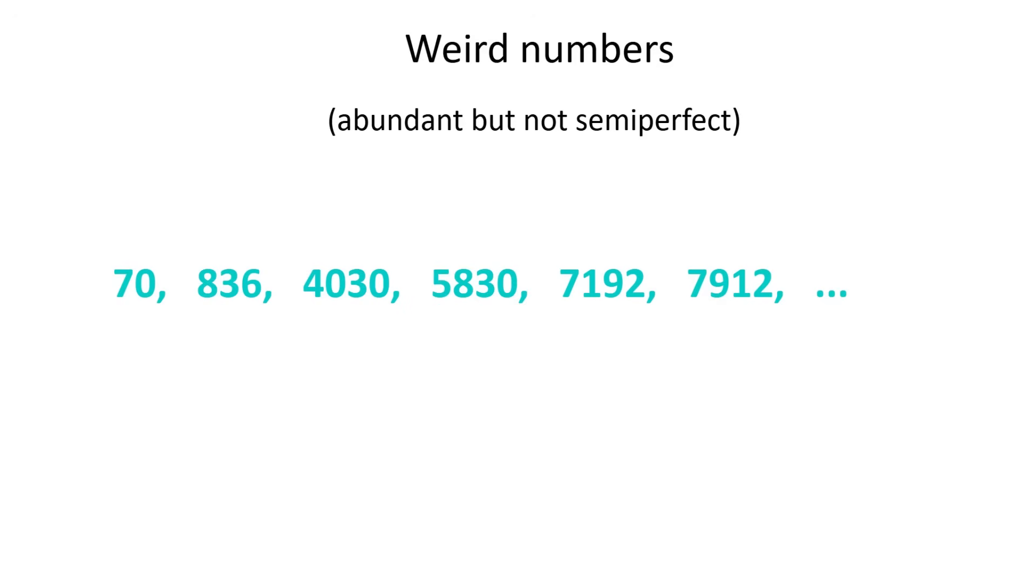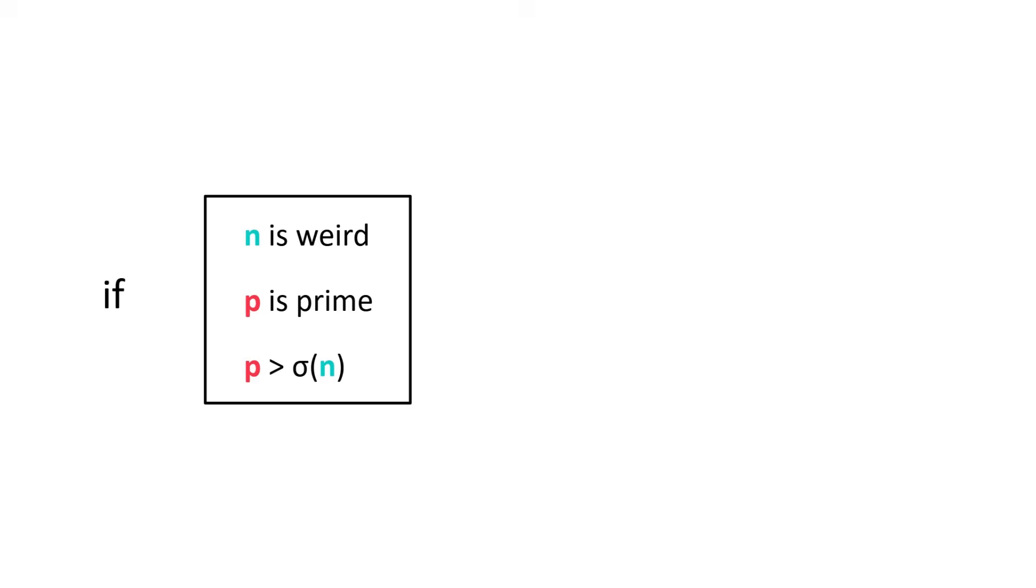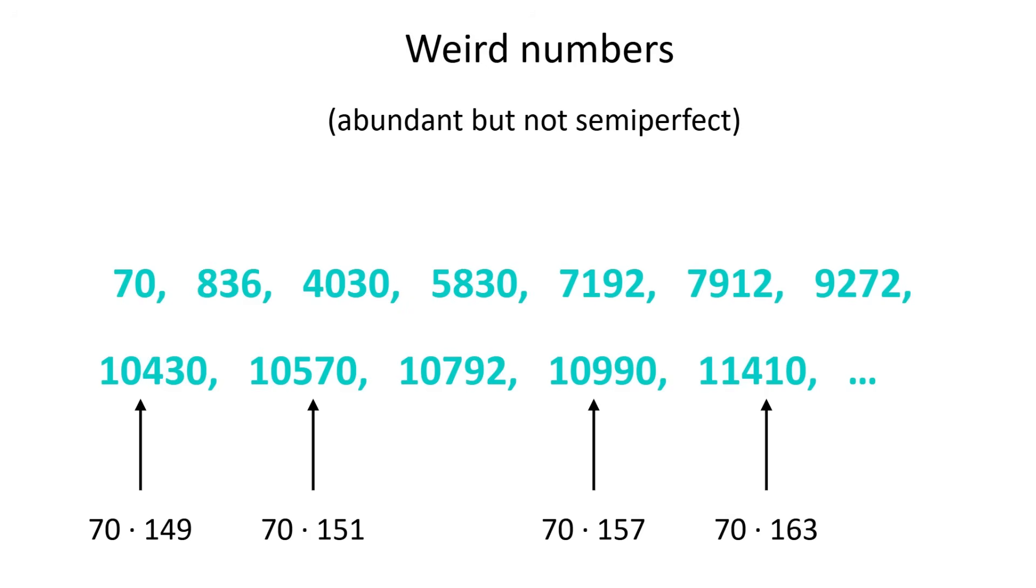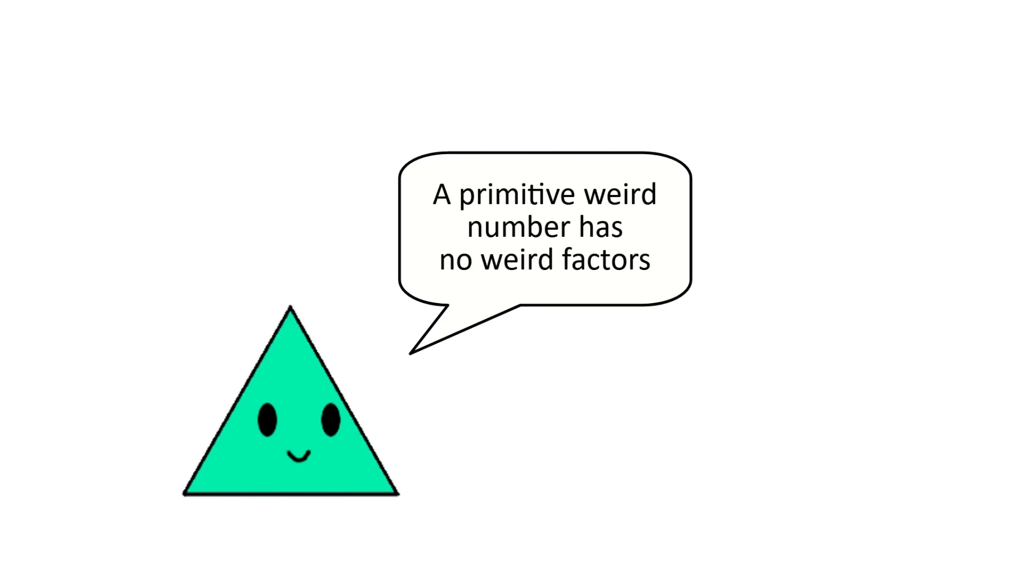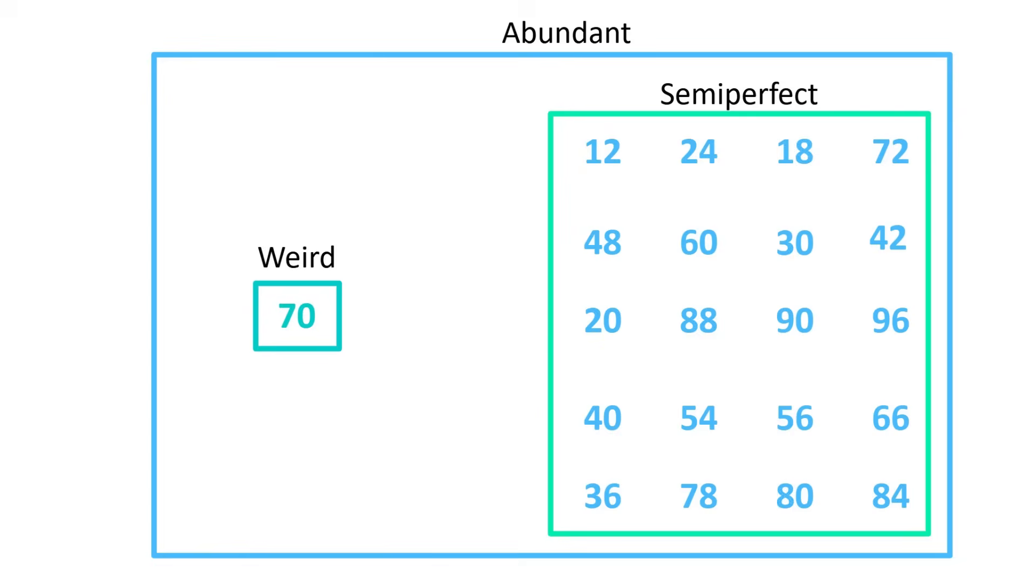After the first few, they actually get a bit more common, and even have positive asymptotic density. This is because if n is a weird number, then you can multiply it by any prime number greater than sigma of n to get another weird number, which is why we get lots of multiples of 70. So just like we did with abundant numbers, we can say a primitive weird number is one that isn't divisible by any smaller weird numbers. With this, we can see just how weird 70 is. Despite having an aliquot sum so close to perfection, 70 is not semi-perfect, which in a way makes it further from perfection than the other abundant numbers.